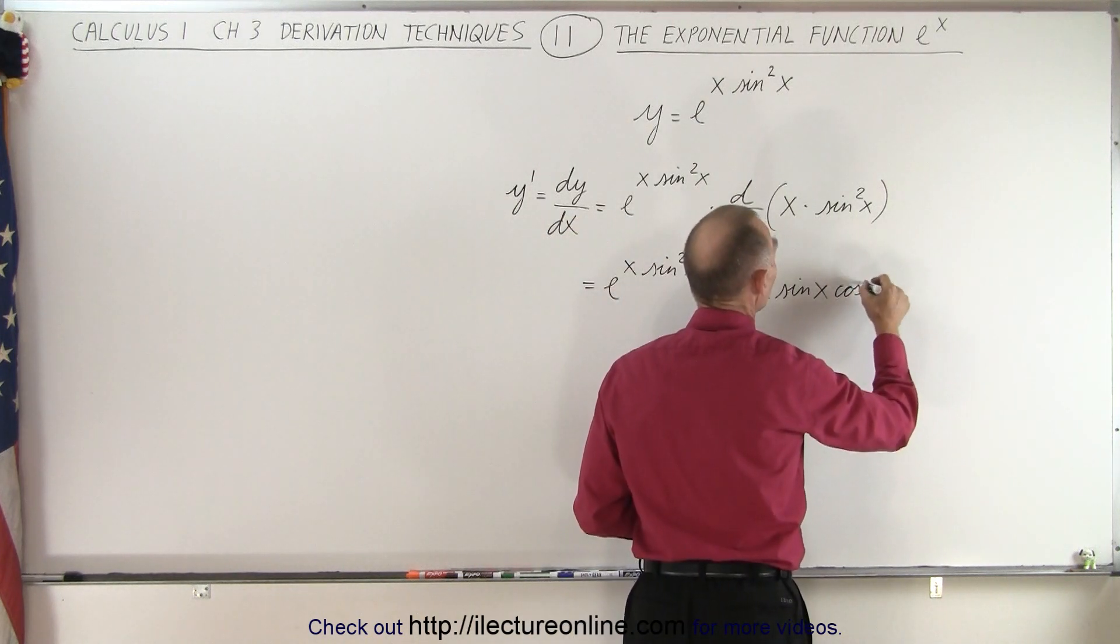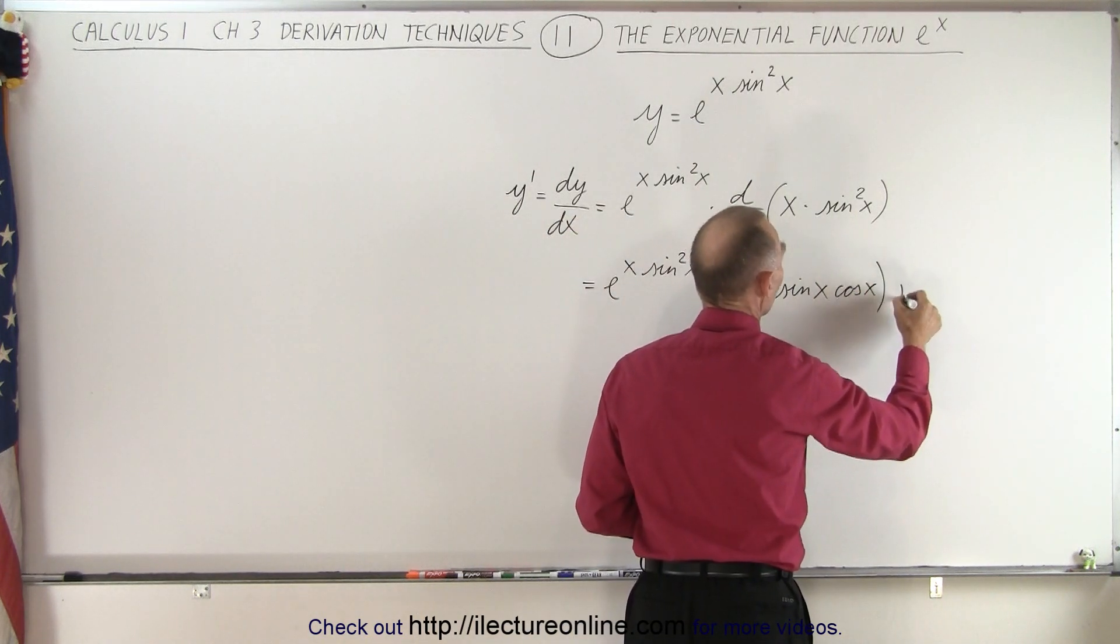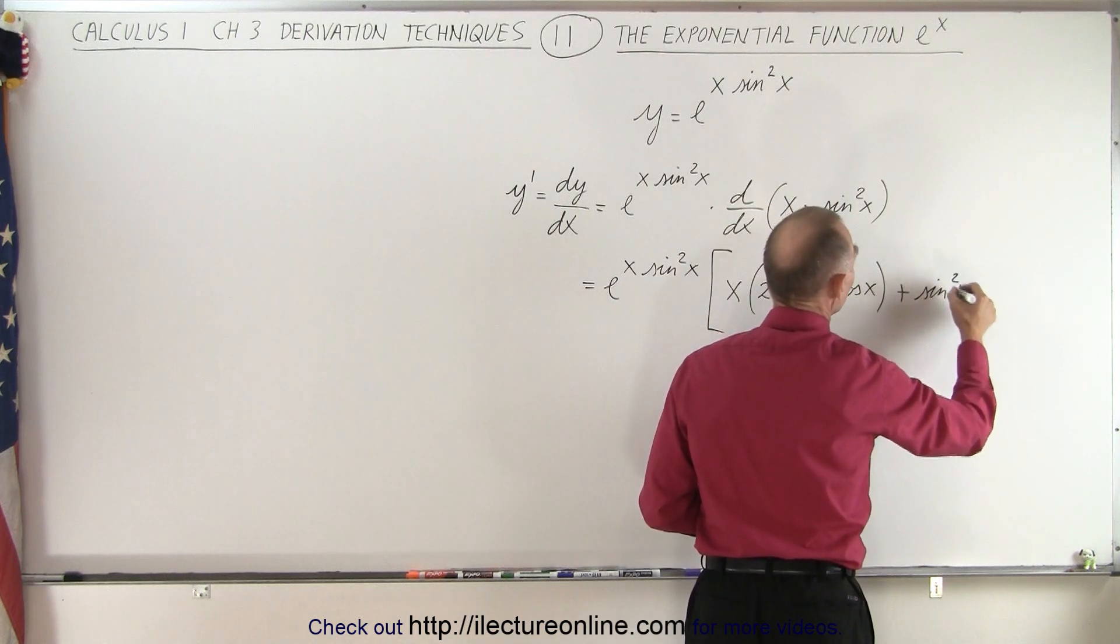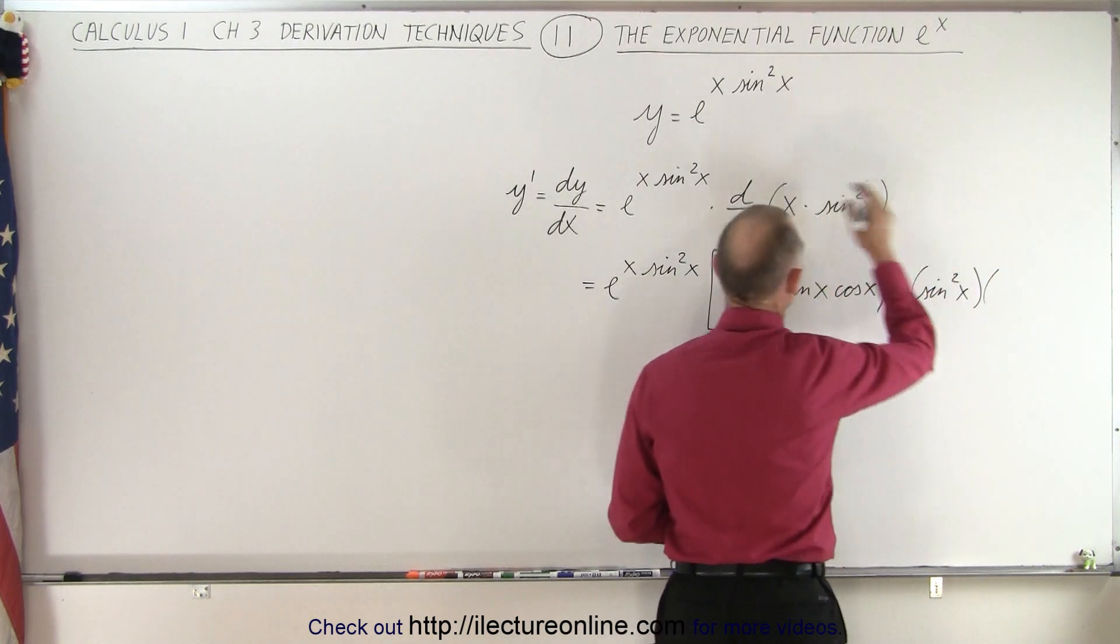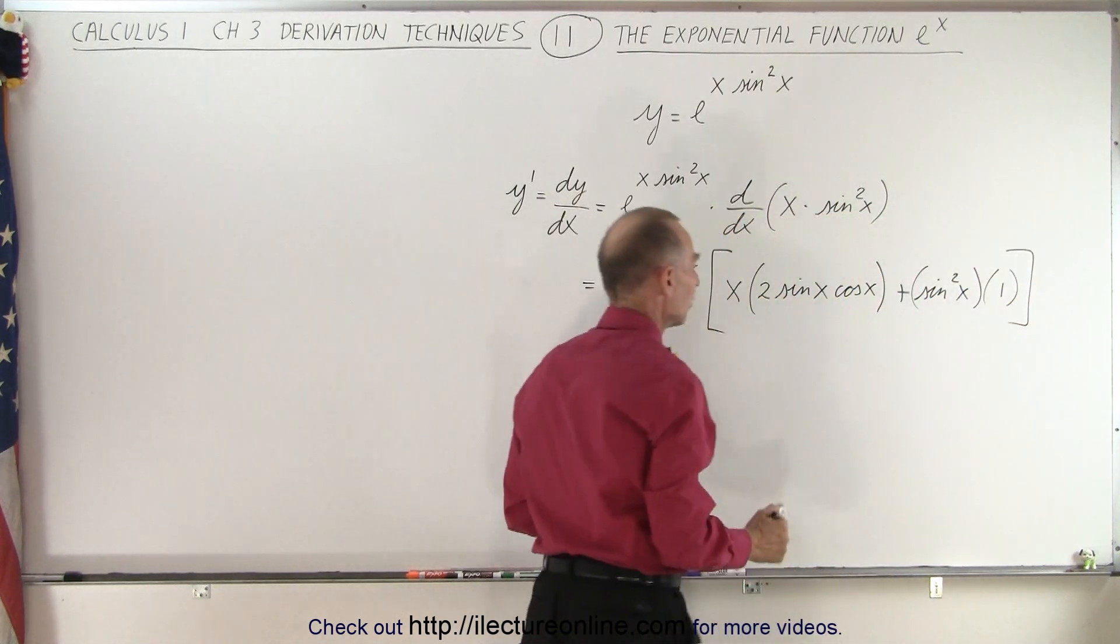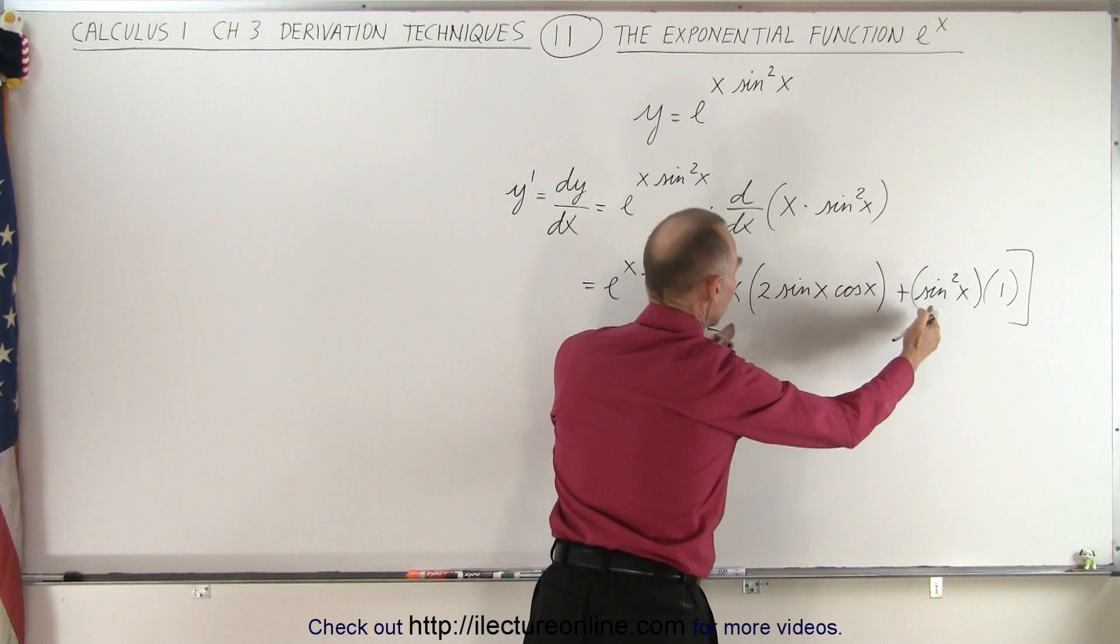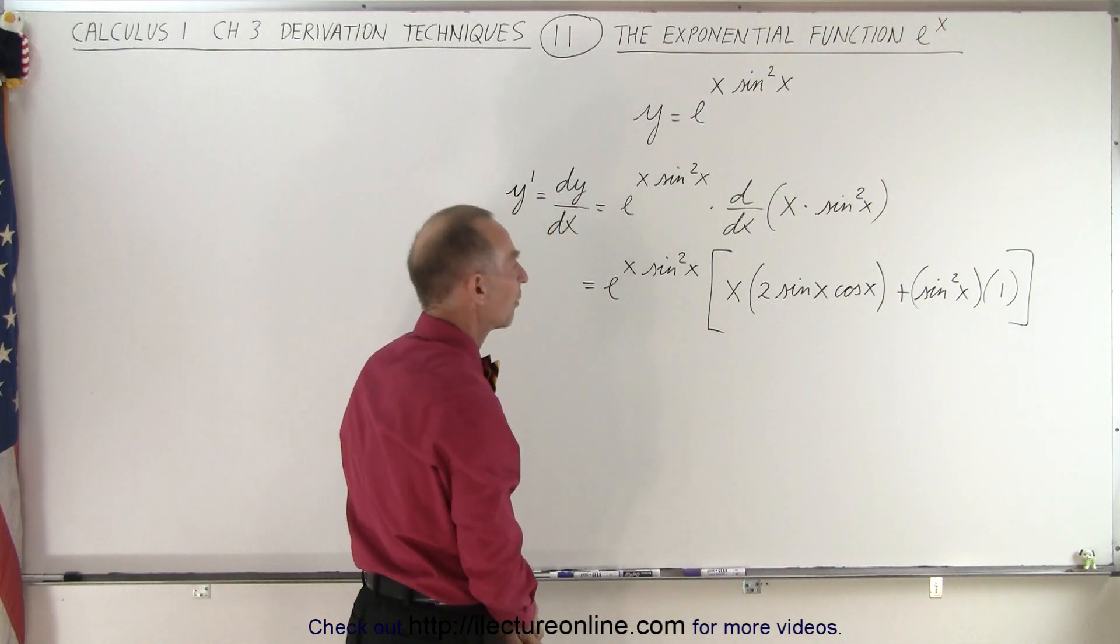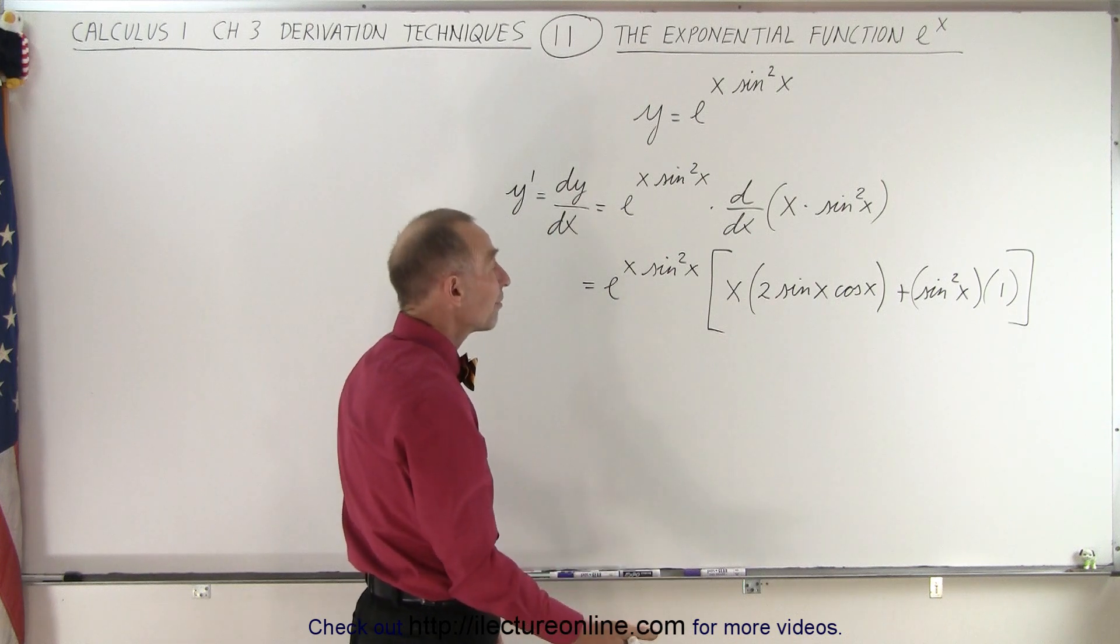Plus the second, which is the sine square of x, times the derivative of the first, which is one. And so now we have this whole thing here that is now the product of e to the x sine square of x. Could we simplify that?